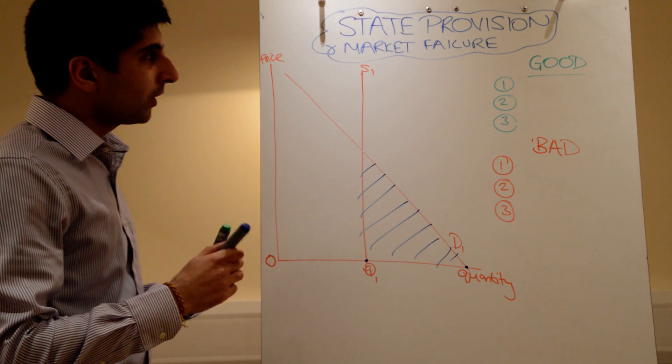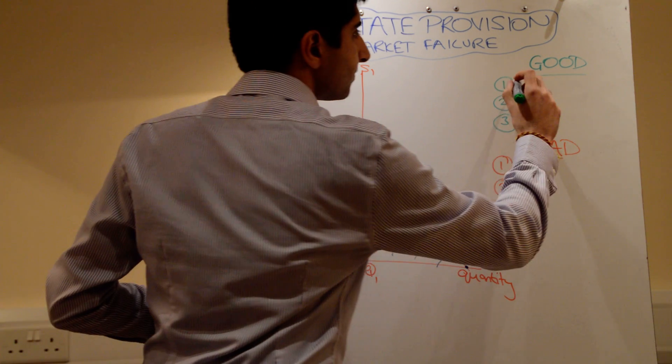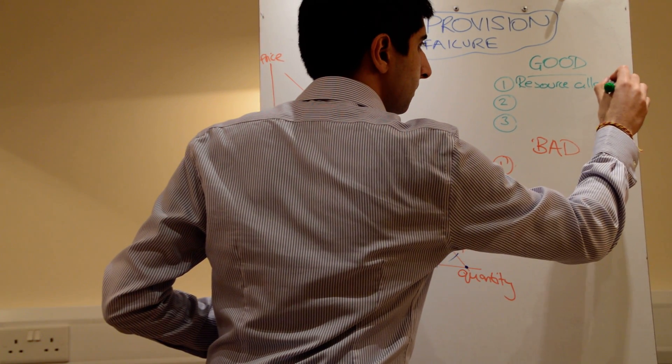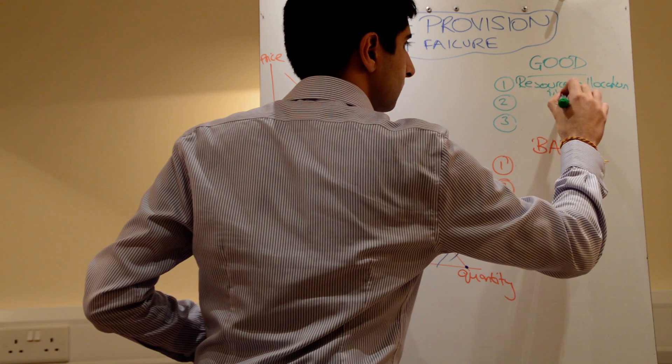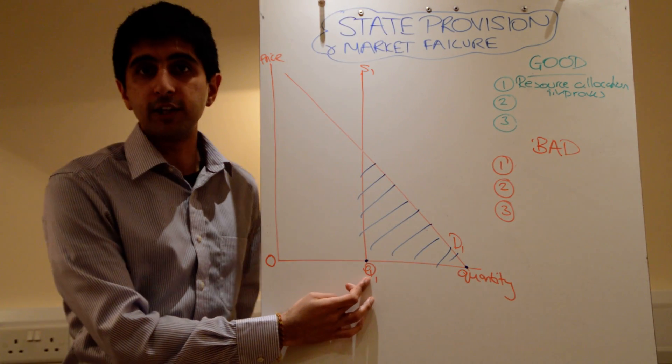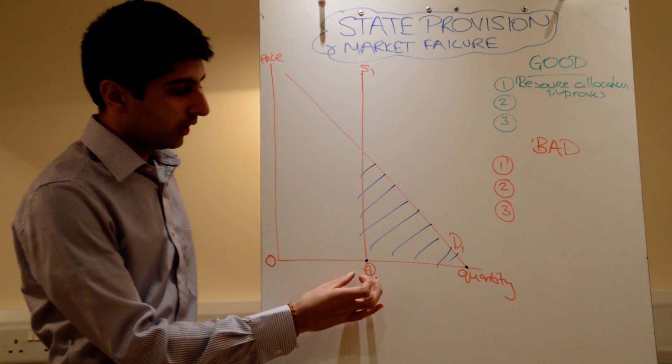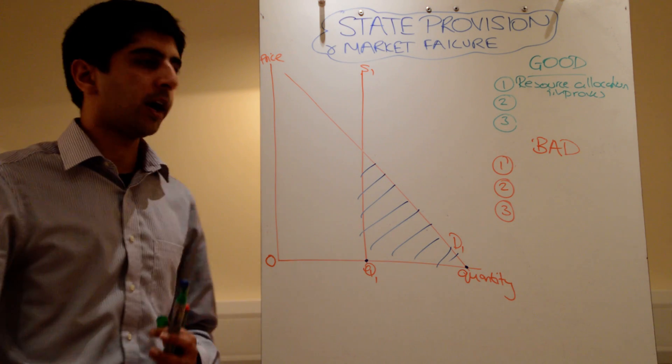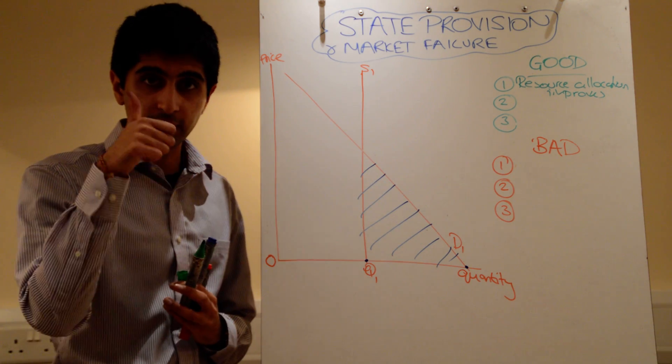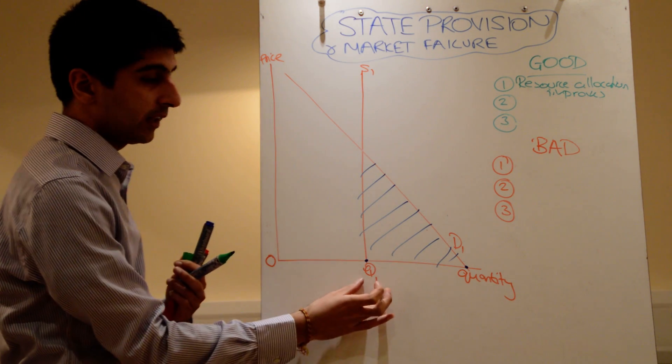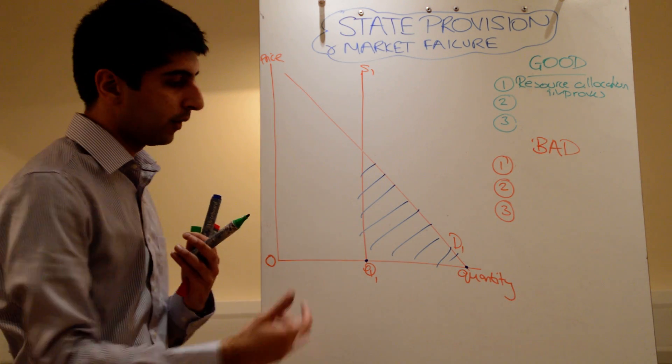Why is it good? Well, you would hope that resource allocation improves. You would hope that Q1 would be Q-star. So for merit goods, we know there's an underproduction, hopefully now that's solved. For public goods, there is a missing market, so at least now there are resources, in which case great. So resource allocation should improve, taking us hopefully at this social optimum or at least towards it.